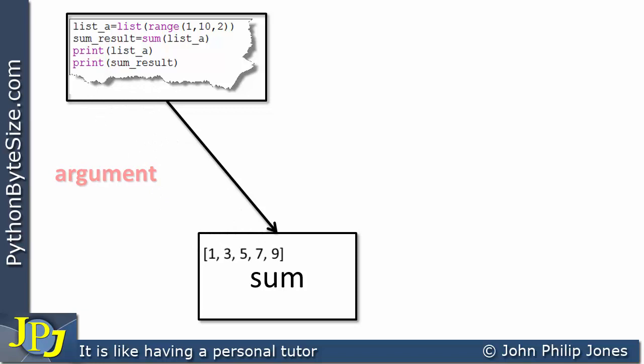There you can see the argument go in. The sum will then add that lot up and get the value of 25. 25 appears within the sum function, which is then going to be the return value, which returns to here in the program.